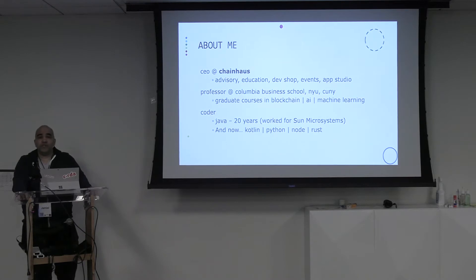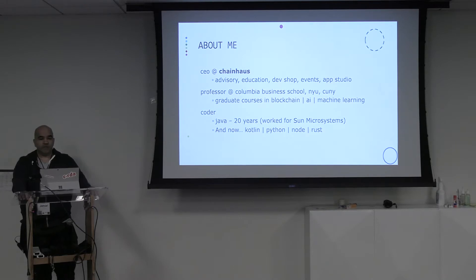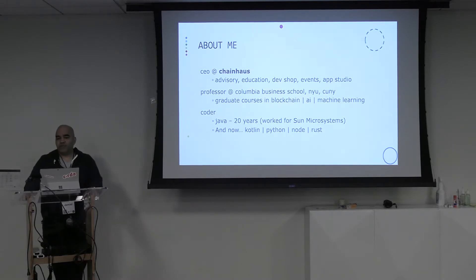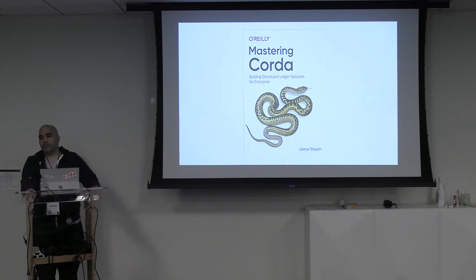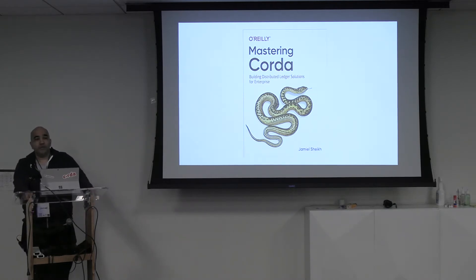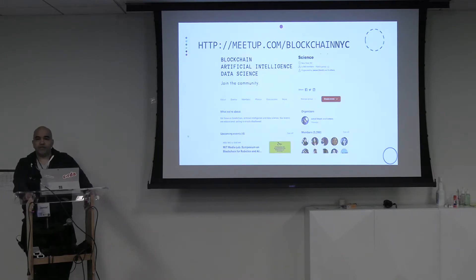I've been involved with Java for more than 20 years. I used to work with Sun Microsystems and started working with Java in early 2000, building multi-threaded, server-based cluster systems. Now I work with a bunch of different languages, including Kotlin. I'm writing the O'Reilly book on Corda, which is the blockchain that is built on Kotlin. And I run a blockchain data group — one of the largest blockchain communities in New York City.